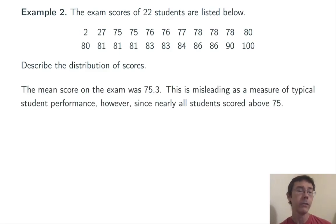The mean score on the exam was 75.3. This is misleading as a measure of typical student performance, however, since nearly all students scored above 75. The mean is being dragged down by the extremely low values, 2 and 27, students that may not have even been coming to class.